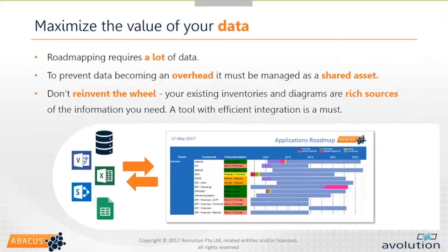The third preliminary consideration is really important when talking about road mapping — you're going to be working with a lot of data, whether applications, processes, or technologies. You need to actually manage that data as a shared asset to prevent it becoming an overhead. I can speak from personal experience of road mapping initiatives where the data got out of control and actually derailed the whole initiative. If version control is out of step or people are working on different versions of the data, that can be a major problem, so you need to have some management around that information.